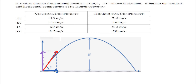In this first question, a rock is thrown from ground level at 18 meters per second at 25 degrees above the horizontal, and we need to find the vertical and horizontal components of this launch velocity. The vertical velocity vector is denoted Vy, and the horizontal velocity component is denoted Vx. In the diagram, the red vector represents the launch velocity of 18 meters per second at 25 degrees above the horizontal.